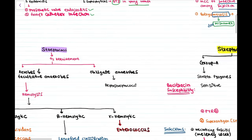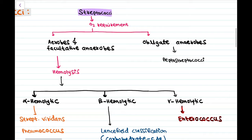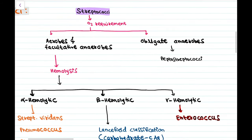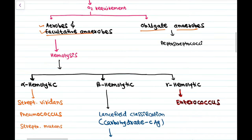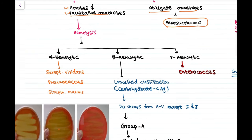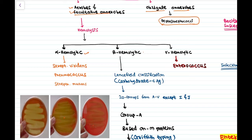Streptococci are classified based on oxygen requirement into aerobes, facultative anaerobes, and obligate anaerobes. Obligate anaerobes are Peptostreptococci. The aerobes and facultative anaerobes are further divided into alpha hemolytic, beta hemolytic, and gamma hemolytic based on the type of hemolysis they cause.